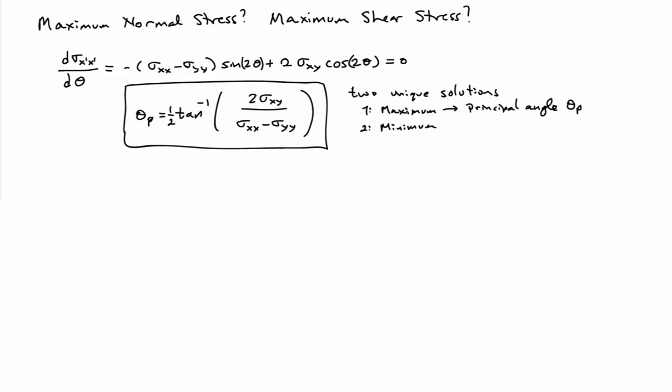This equation, when you take the arctangent, has different branches of the arctangent function, so it actually gives two unique solutions. The first one is a maximum, and that's what we call the principal angle theta_p, and the second one gives us a minimum. We're interested in the maximum normally, so we choose the root of these two that gives us the maximal value.